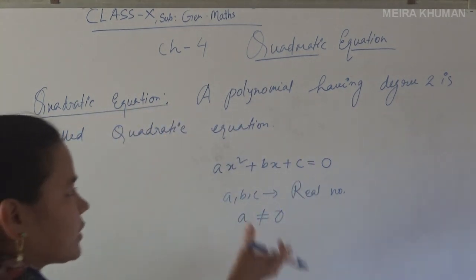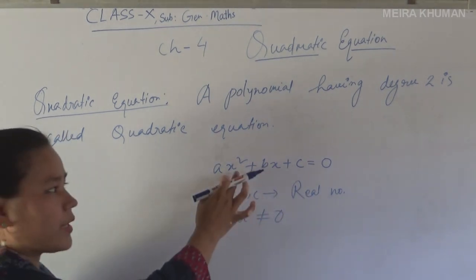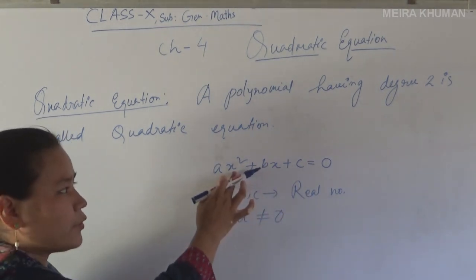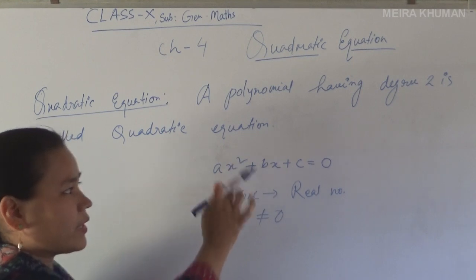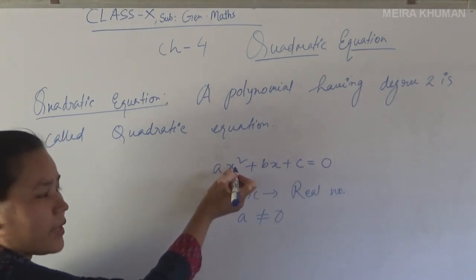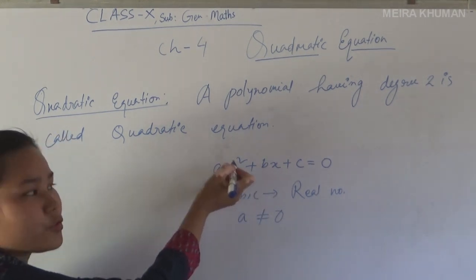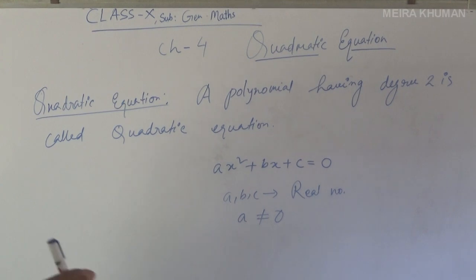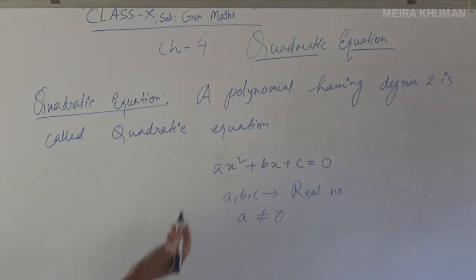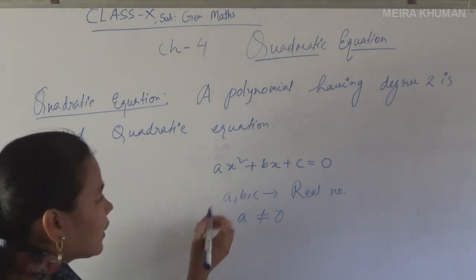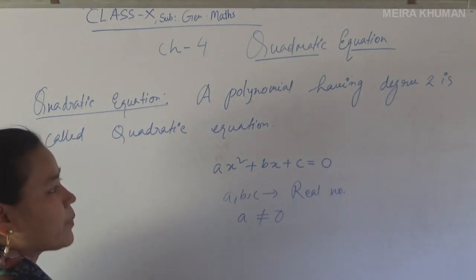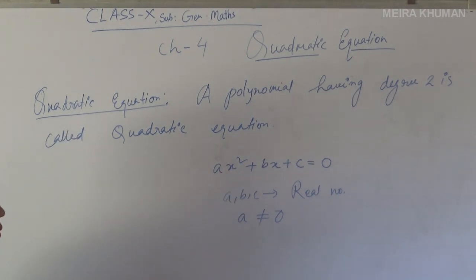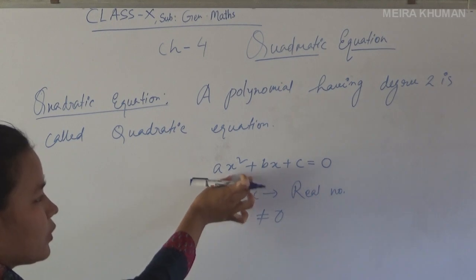In this equation you need to find the value of x. The degree of x is 2, so you should get a maximum of 2 zeros or roots. You will get 2 roots, or maybe 1 root, or 0 roots — but the maximum will be only 2.